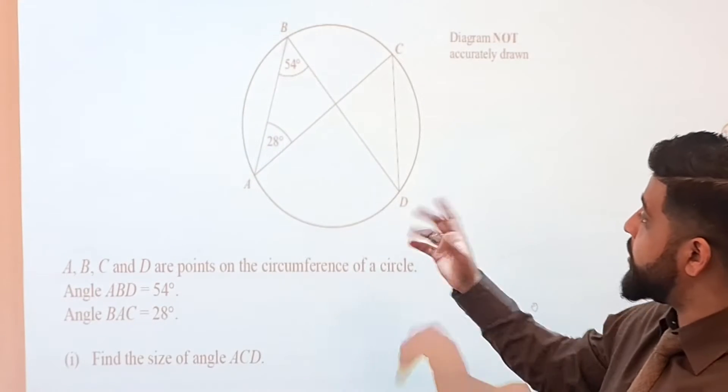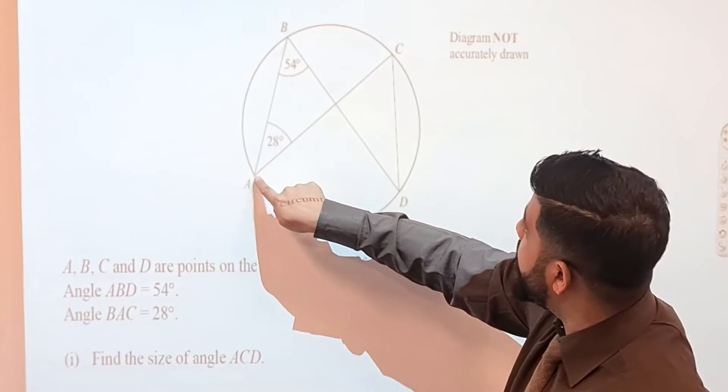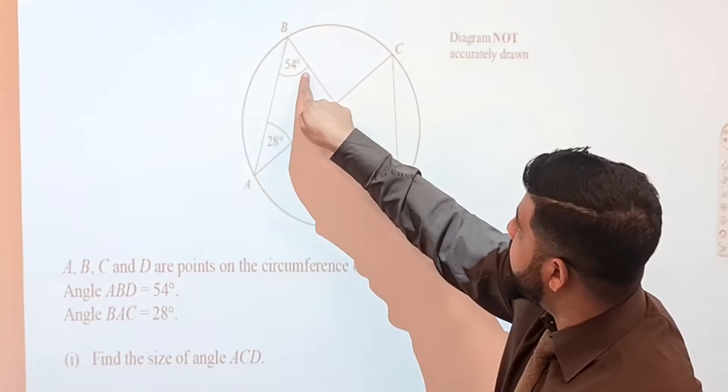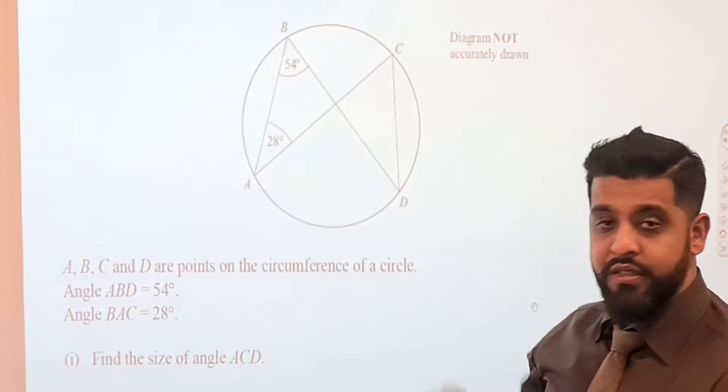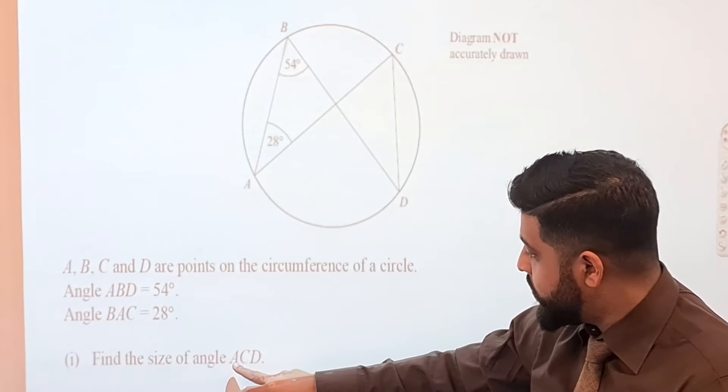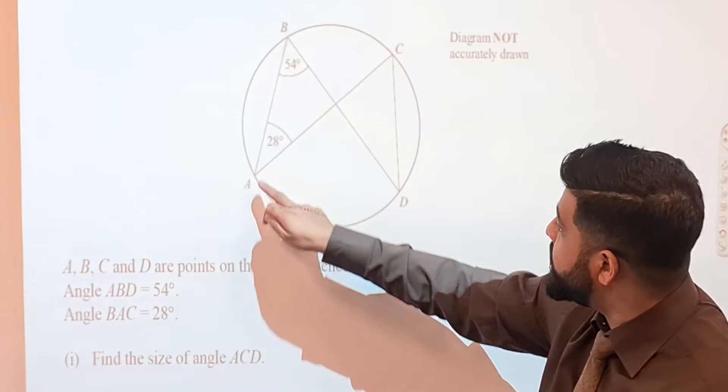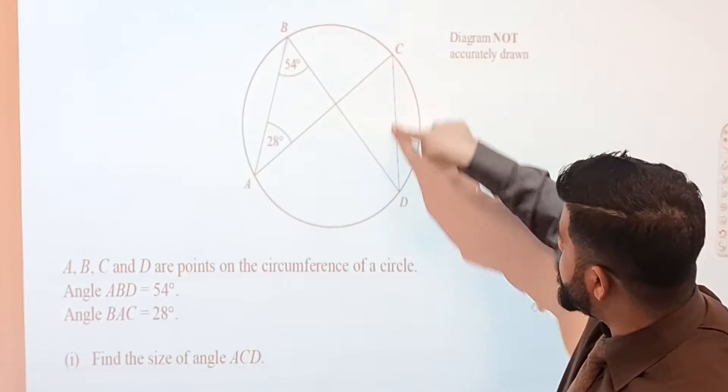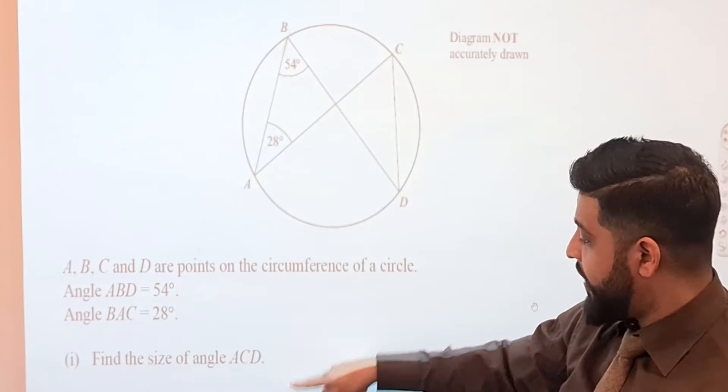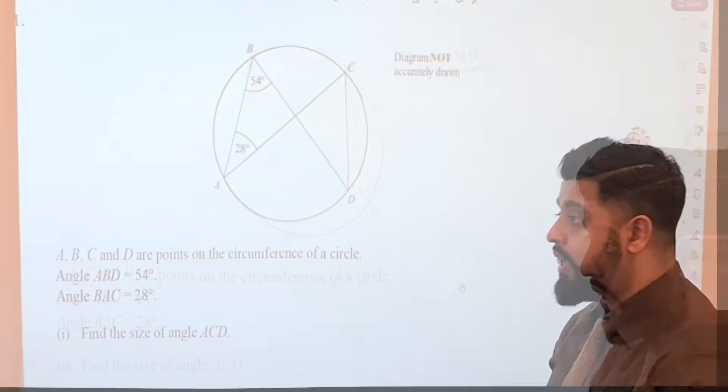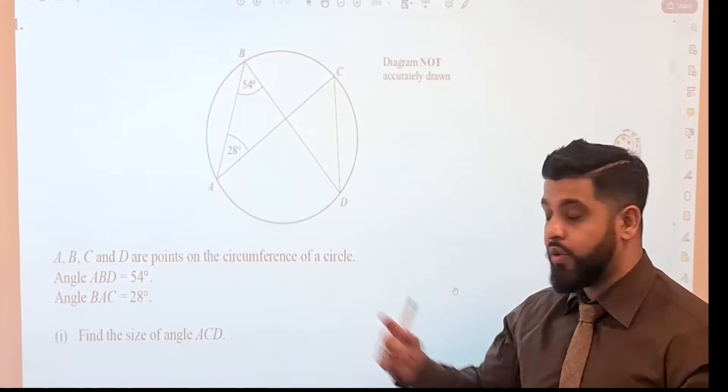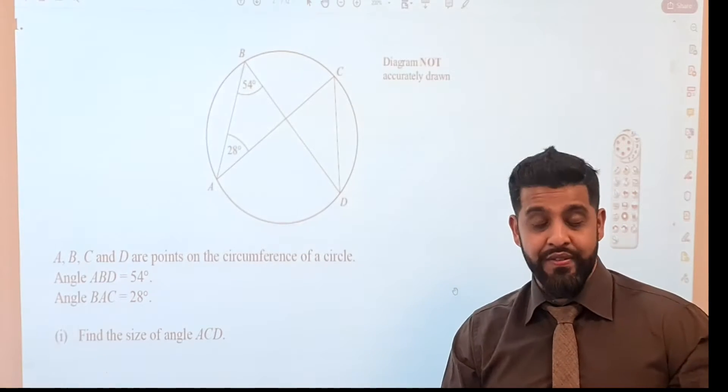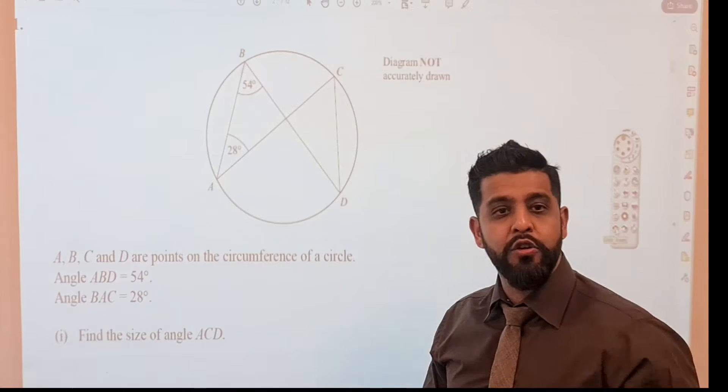So let's have a look at our first question. We are told that angle ABD is 54 degrees and we are told that angle BAC is 28 degrees, and we are asked to find angle ACD, which is A to C to D, so this angle here, and we have to give a reason for our answer.